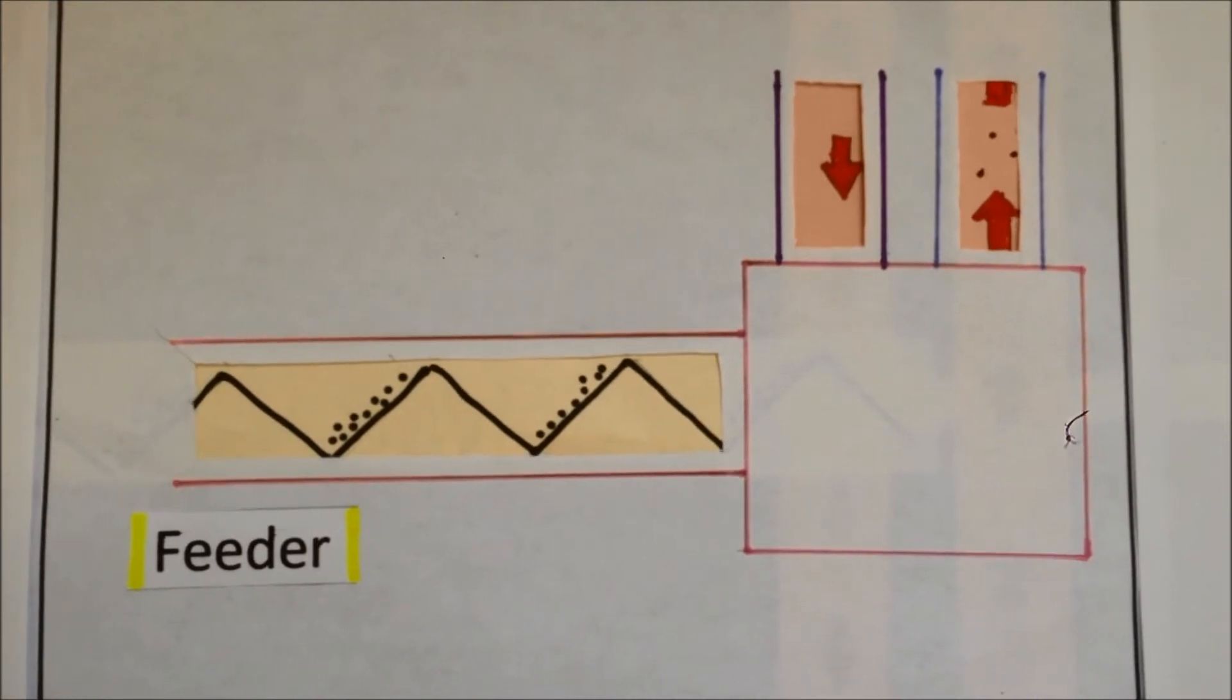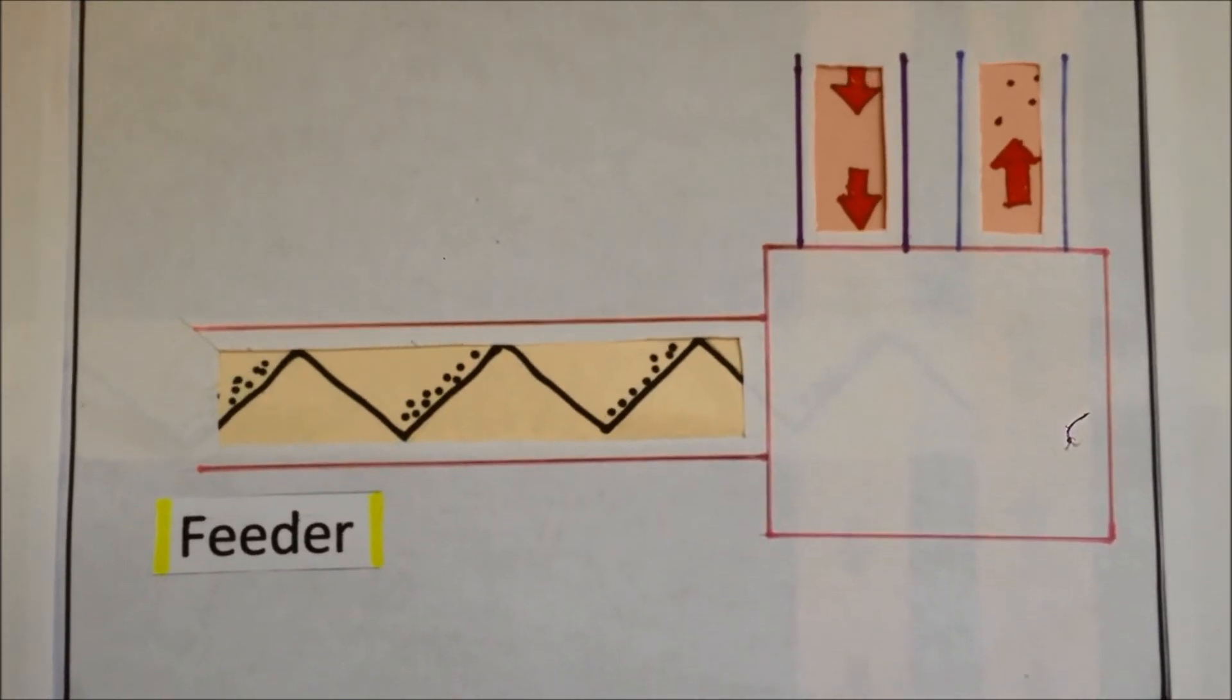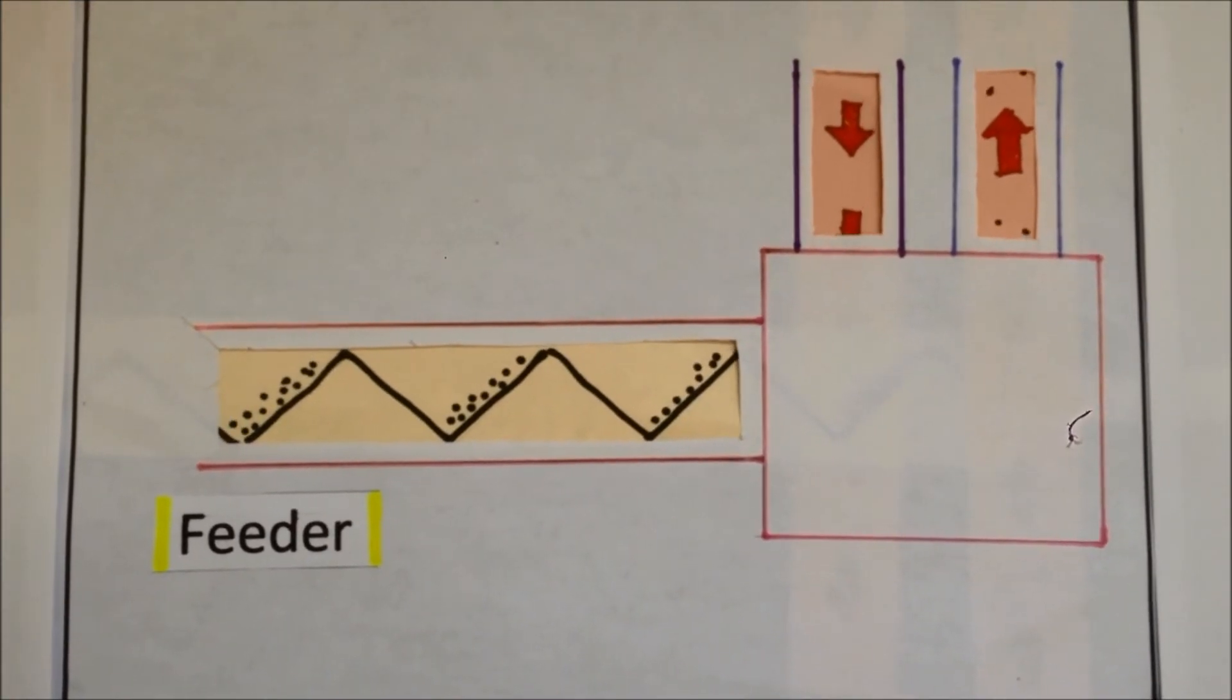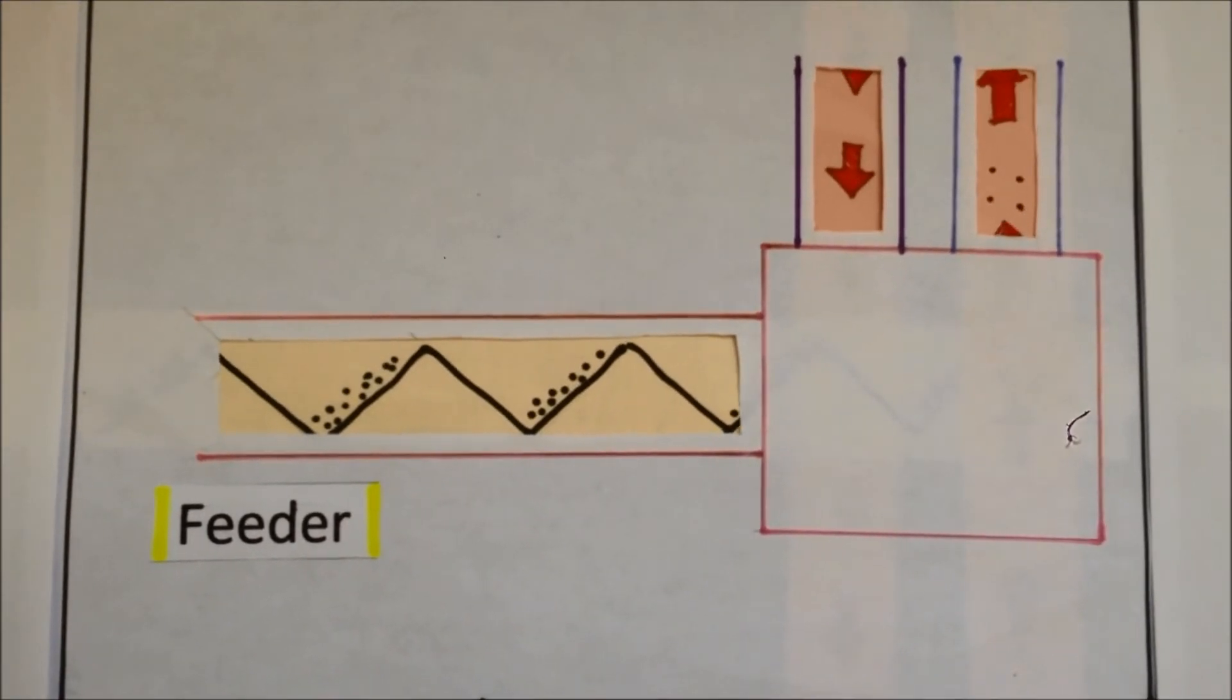The screw feeder controls the flow rate of wet material. Wet material is dispersed into a hot air stream which conveys it through a drying duct.